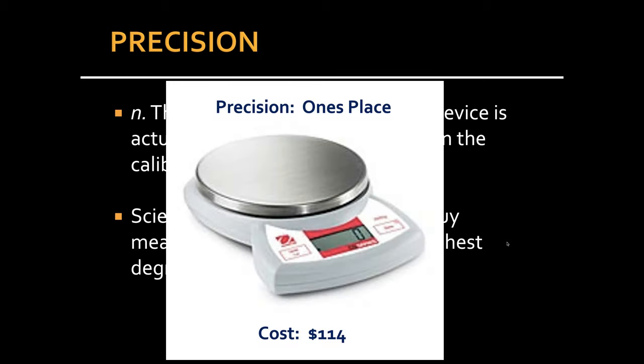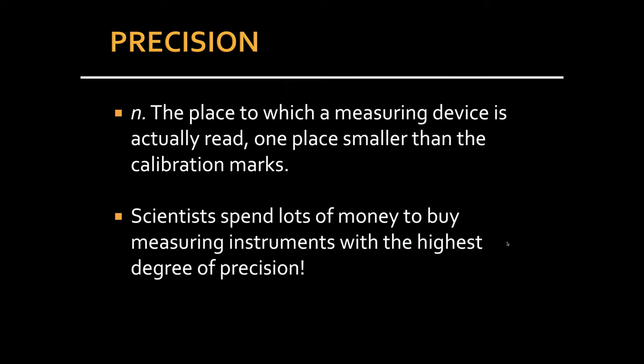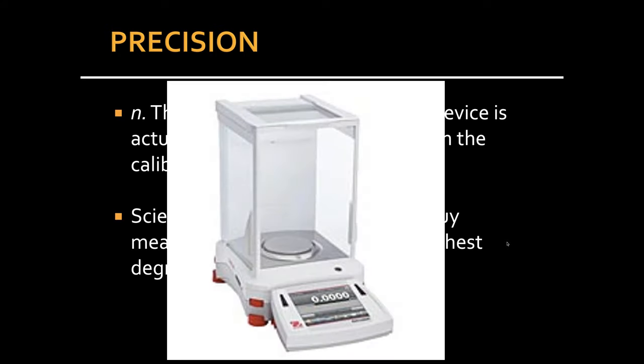So for example, this balance right here, which records to the nearest whole number gram, is relatively inexpensive, $114. And if you only need to go to the nearest gram, let's say you're weighing your food for dietary purposes, you really only need to go to the nearest gram, then a balance like this will be perfectly acceptable to you.